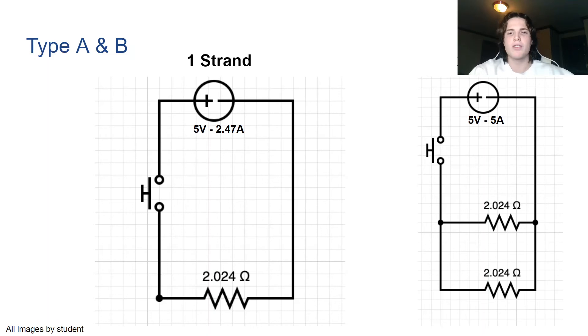Since an electric current is creating the heat necessary for contraction, the wires are in parallel, and the length of the wire is constant, the diameter of the wire being tested is the only factor in the volts and amps required. This means that types A and B have the same resistivity of 2.02 ohms and the same circuit diagram, both requiring 5 volts 2.47 amps for one strand and 5 volts 5 amps for two strands.